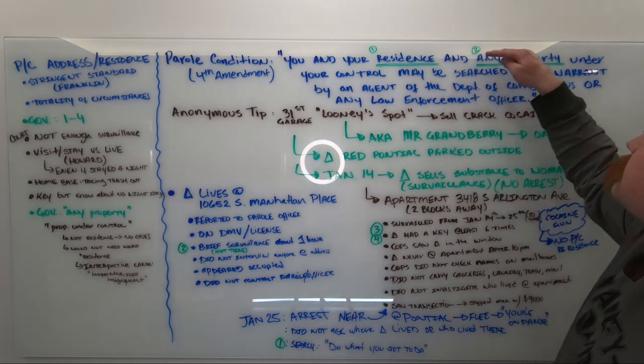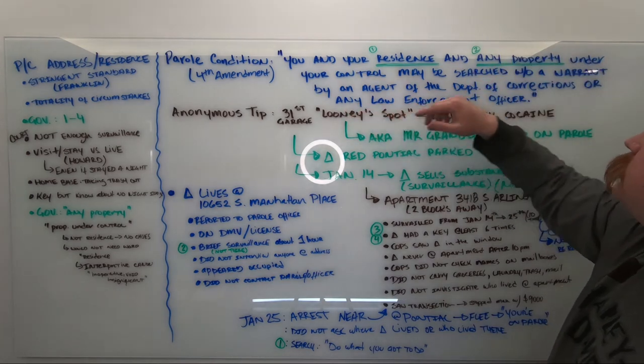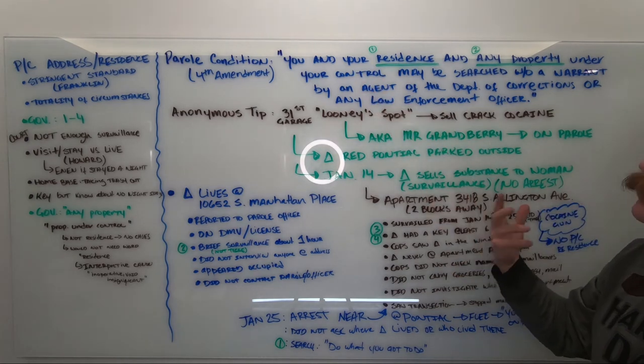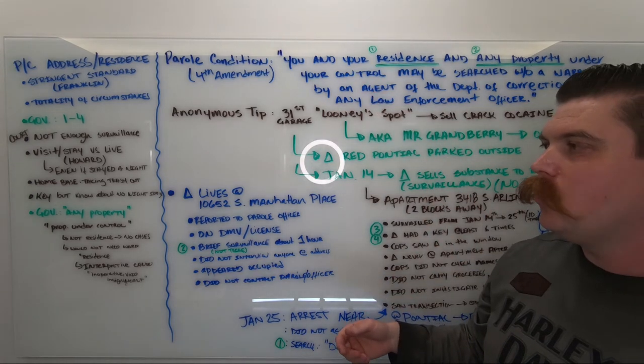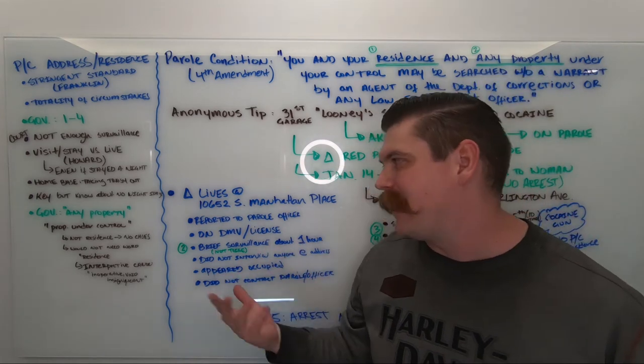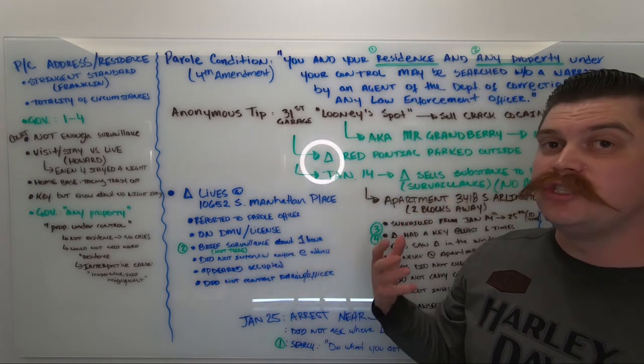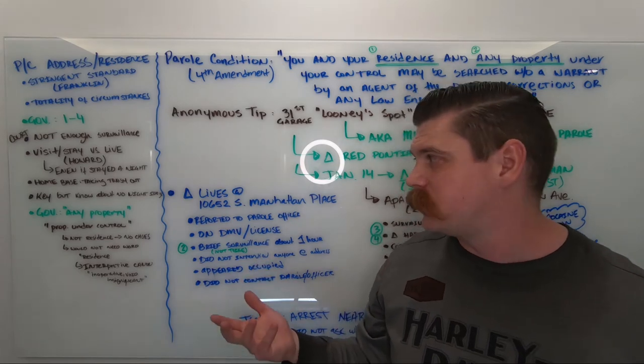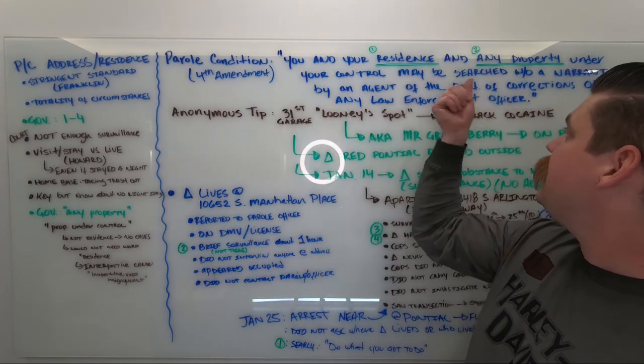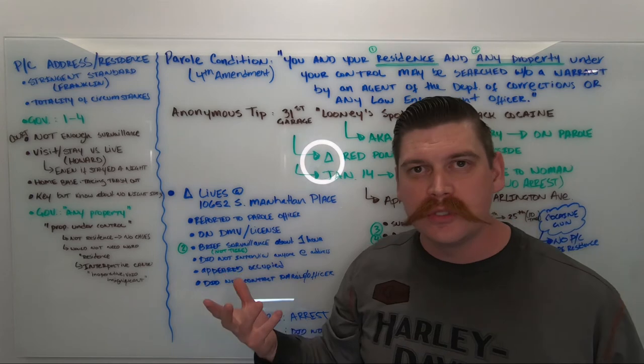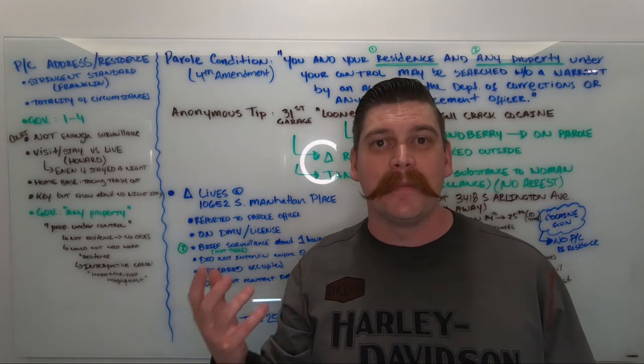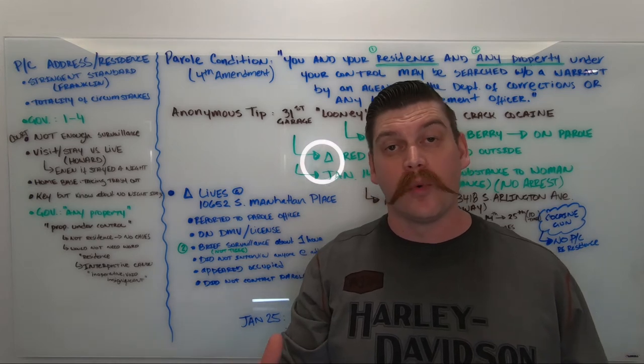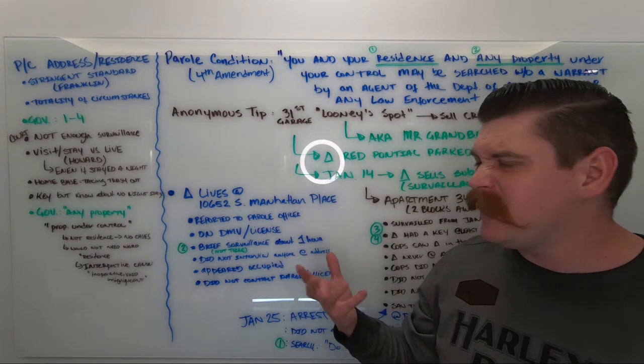That the second provision in the condition that says any property under Mr. Granbury's control can be searched. Well, the Ninth Circuit doesn't buy it. They say that there's no cases in the Ninth Circuit or really any other circuits where any property was used in order to justify looking at somebody's apartment or a place of residence or where somebody lived. It just didn't make any sense.